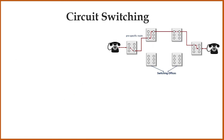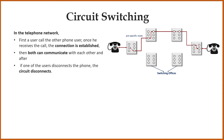This type of switching was designed and used in the early analog telephone network. In the telephone network, first a user calls another phone user. Once the call is received, the connection is established and both can communicate with each other. After that, if one of the users disconnects the phone, the circuit disconnects.